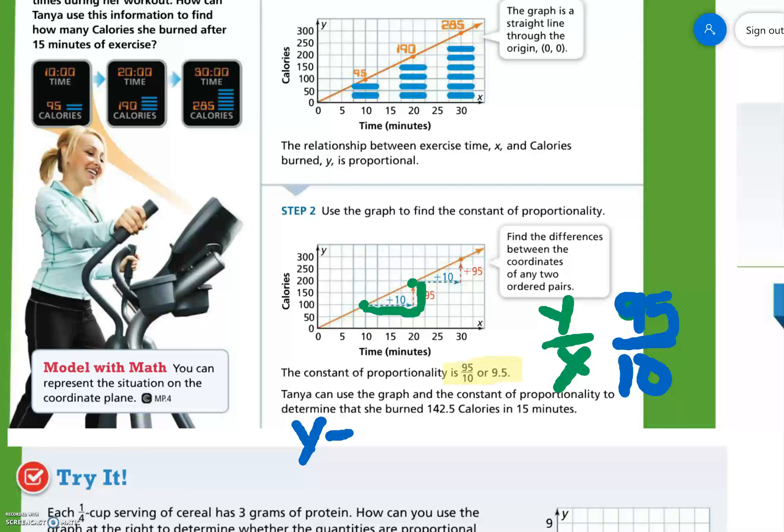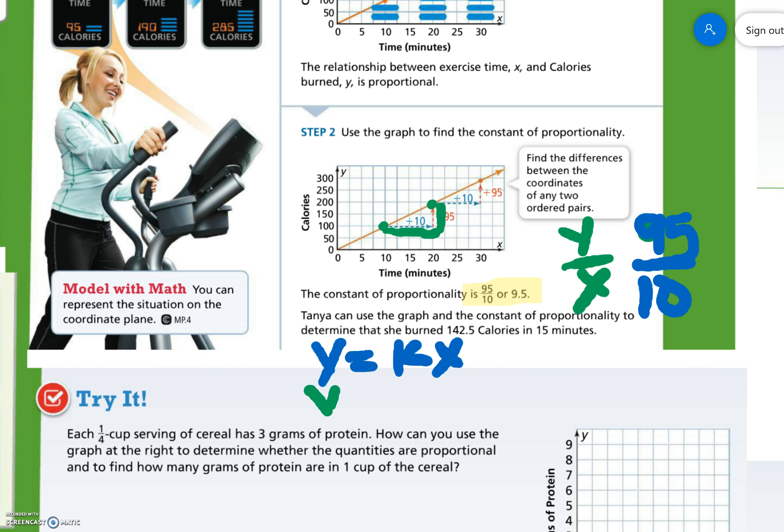So then if we use the equation y equals kx, and we just found that our k is 9.5, we do y equals 9.5x. And we want to see how many calories she burns in 15 minutes. So instead of x, we put 15, because minutes is on the x-axis. If we do 9.5 times 15, we get 142.5.